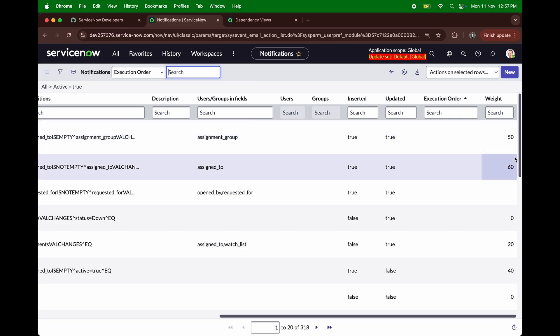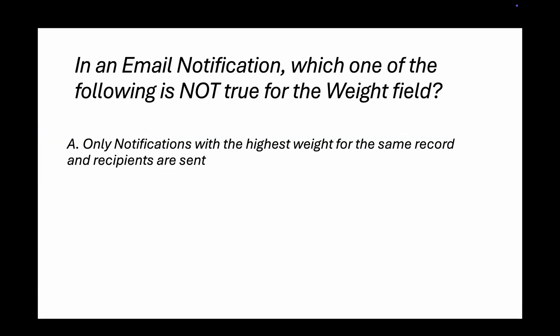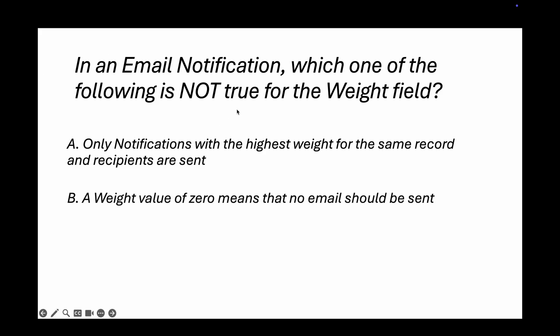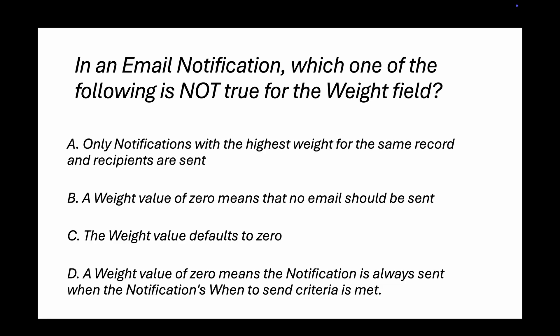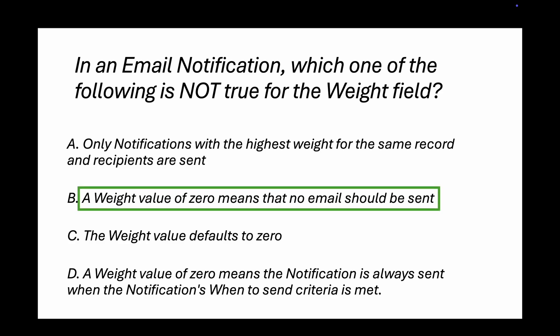The options are: only notifications with the highest weight for the same record and recipients are sent; a weight value of zero means no email should be sent; the weight value defaults to zero; a weight value of zero means the notification is always sent when the 'when to send' criteria is met. Option D is correct — zero is the default and means the notification will send when criteria are met. Option B is NOT true, because minus one means the notification won't send, not zero. So option B is the answer.